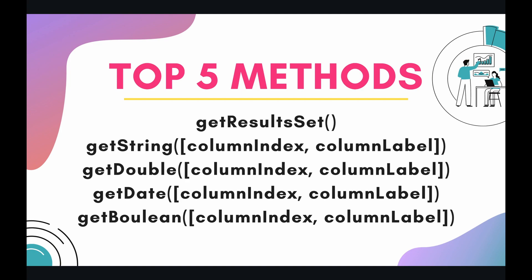We're going to be learning the top five methods for today, which are getResultSet, getString, getDouble, getDate, and getBoolean. For those last four methods, you can see that we can use either the column index or the column label when we are getting these data types. So let's see what I'm talking about in the code right now.